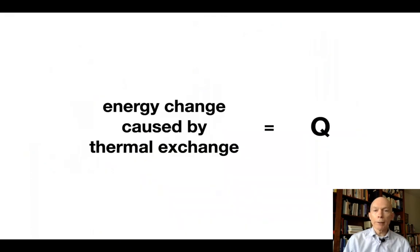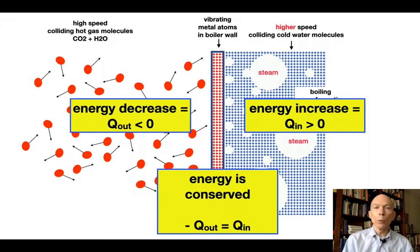Furthermore, what we say is that the energy change caused by this thermal exchange involving the collision of atoms and molecules, we call that a symbol Q. And so when we use the letter Q, we say that the energy decrease of the gas is equal to Q out, meaning energy is leaving the system. That's a negative number. Q out is less than zero.